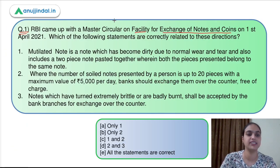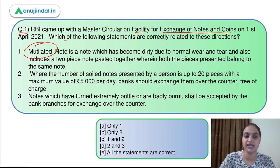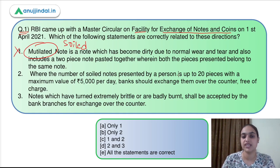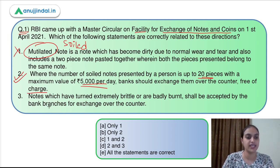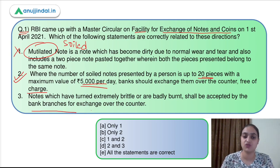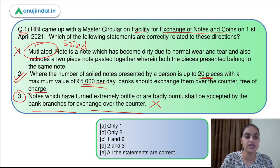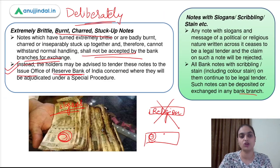Now evaluating the statements for Question 1: The first statement says a mutilated note is one which has become dirty due to normal wear and tear — this is incorrect; that describes a soiled note. The second statement says where the number of soiled notes is up to 20 pieces with a maximum value of 5,000 rupees per day, banks can exchange them over the counter free of charge — this is absolutely correct. The third statement says extremely brittle or badly burnt notes shall be accepted by bank branches — this is wrong; they must go to the RBI issue office. The answer is option B.